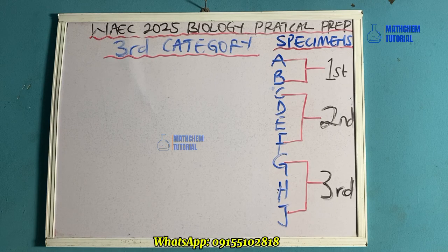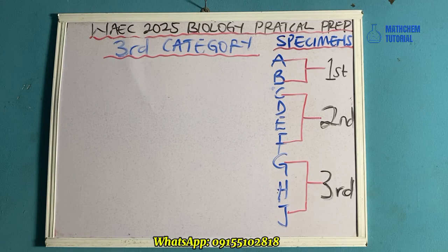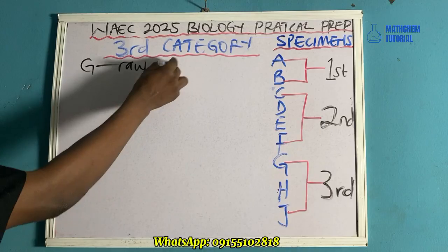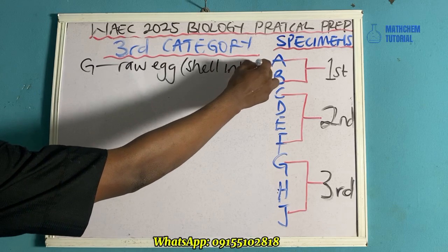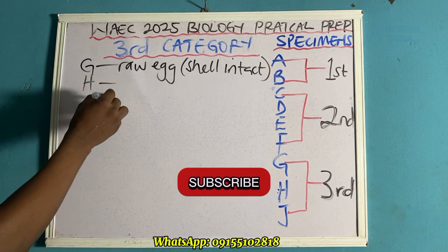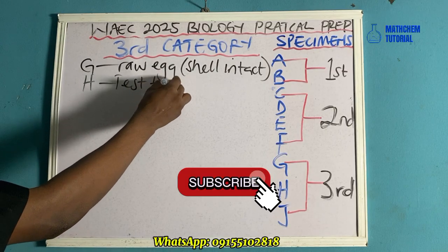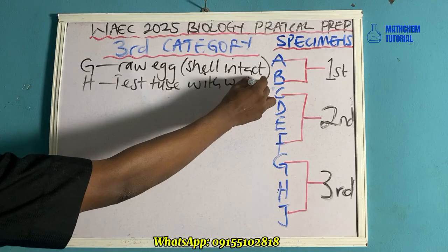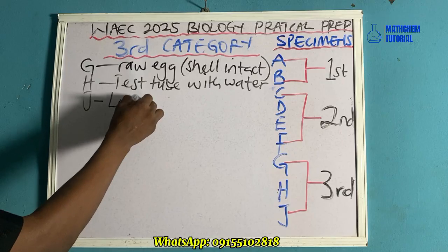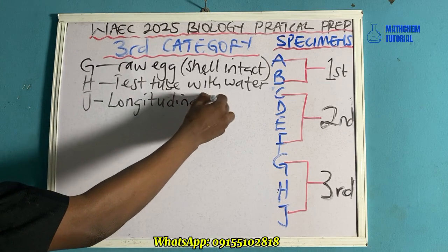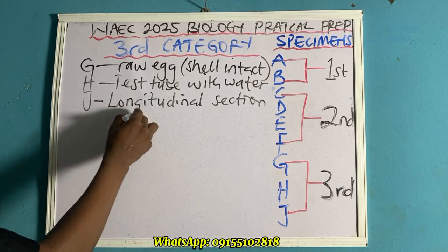The possible questions you should be expecting for this third category: you may have to identify specimens G, H, and J. Specimen G is a raw egg — note that it is intact with shell, that is, shell intact. Specimen H is a test tube with water. Specimen J is a longitudinal section of a boiled egg.